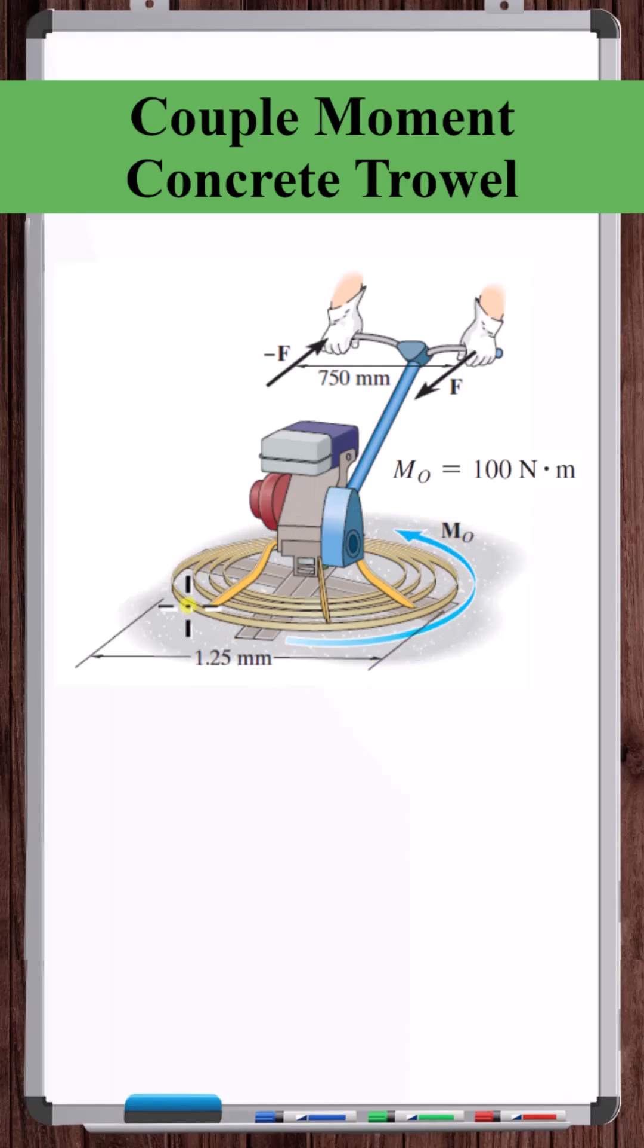The forces exerted by the concrete on the blades of this trowel create a couple-moment MO of 100 newton meters. What force F is needed to be exerted by the operator's hands to hold the machine steady?